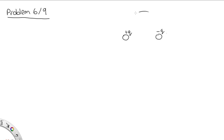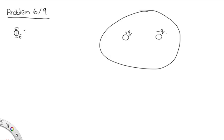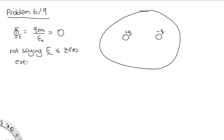Problem 6 for 1221, or 9 for 1231. We're told the surface encloses an electric dipole — a charge +Q and a charge −Q. We're asked what this says about φ_E. Well, φ_E equals enclosed charge over ε₀. Here the enclosed charge is +Q − Q = 0, so the flux through this surface is 0. This is not saying E is 0 everywhere — just that over the surface, E dot dA integrates to 0, though E is not necessarily 0 at each point.